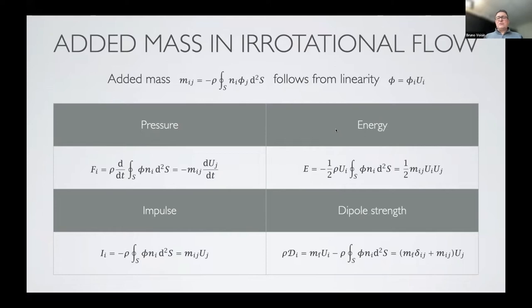added mass represents the fact that when a body moves in a fluid, it must set the fluid into motion, which imparts additional inertia to the body. Added mass is introduced based on the velocity potential, and it appears in the pressure, which is the product of the added mass with the acceleration of the body, in the energy of the fluid,